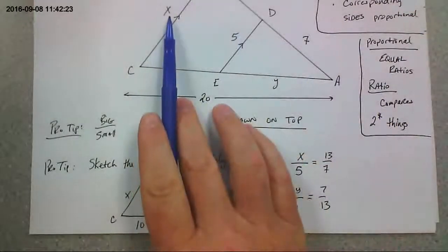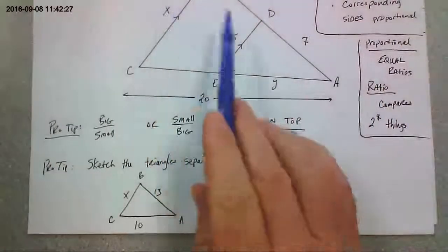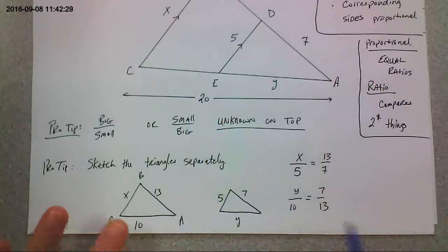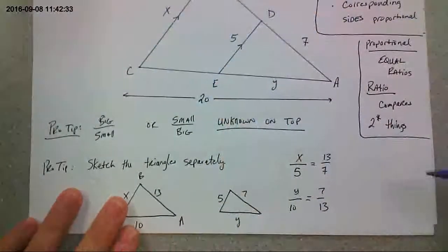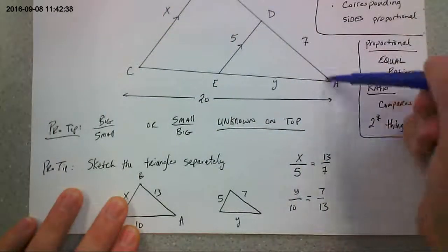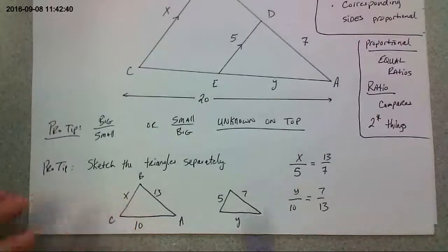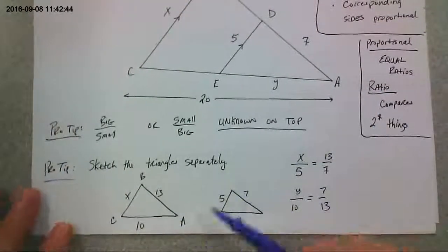So like when we solve for X, that's part of the big triangle we're gonna put that on top. What's corresponding to X is 5. Right? So we're gonna do X over 5, this is gonna be equal to because they're proportional to 13 over 7. Now that could be hard to see so my other pro tip for you is if you sketch the two triangles separately and then label them all.